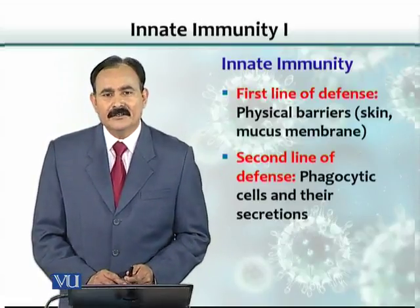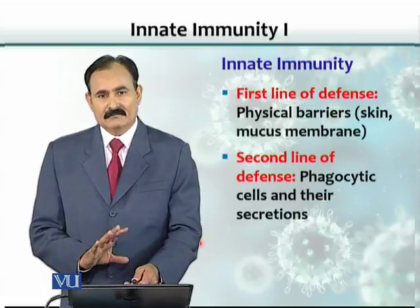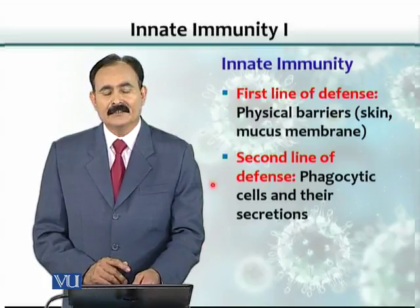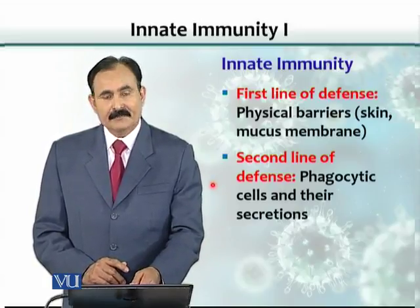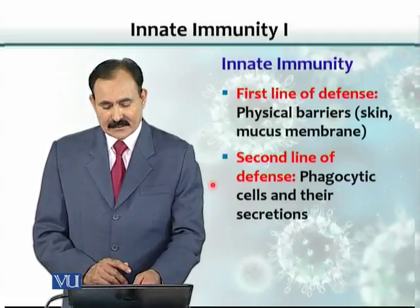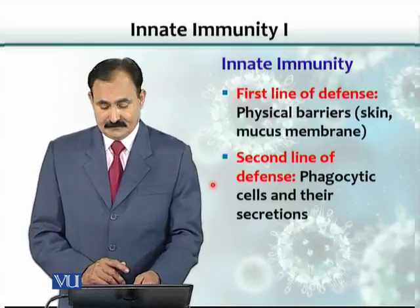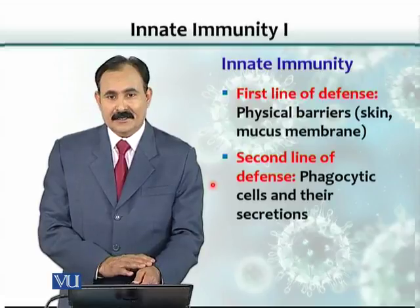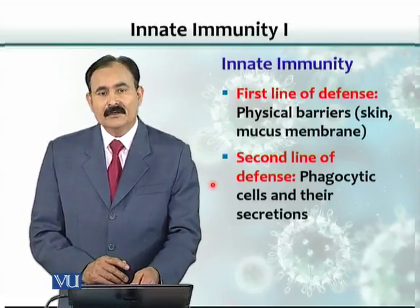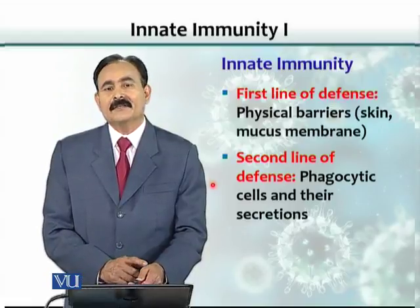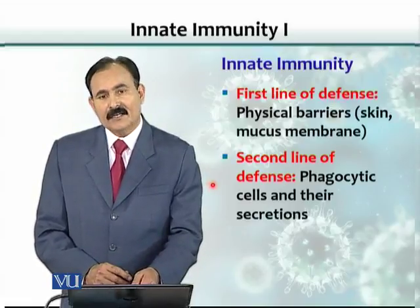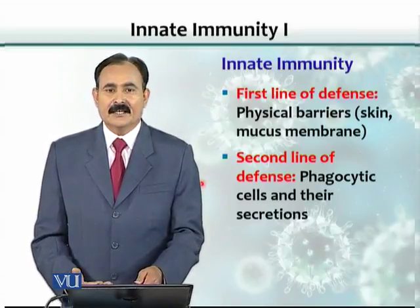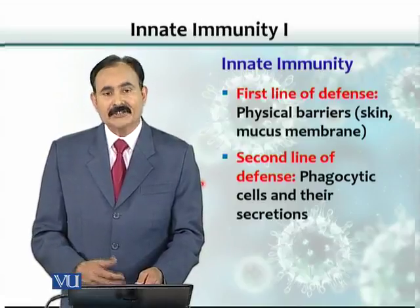Innate immunity can be divided broadly into a first line of defense and a second line of defense. The first line of defense consists of physical barriers such as skin and mucous membranes, as well as chemical barriers — for example, the pH of the stomach. The second line of defense includes phagocytic cells such as macrophages and neutrophils.